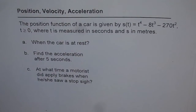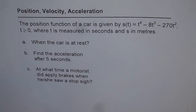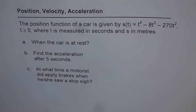The question is: the position function of a car is given by s(t) = t⁴ - 8t³ - 270t², where t ≥ 0, t is measured in seconds and s in meters. You need to find: (a) when the car is at rest, (b) the acceleration after 5 seconds, and (c) at what time a motorist applied brakes when he or she saw a stop sign.